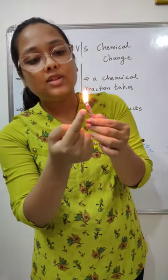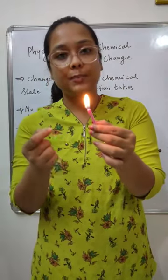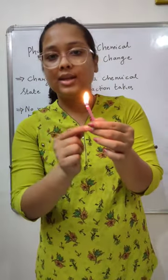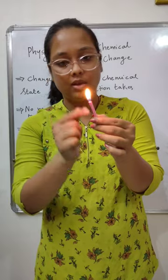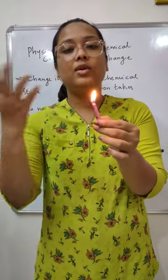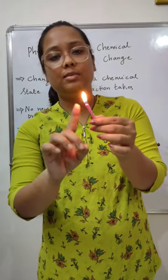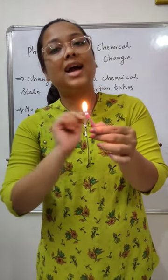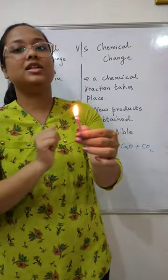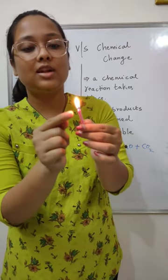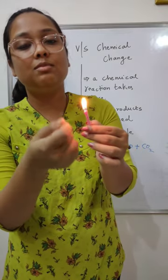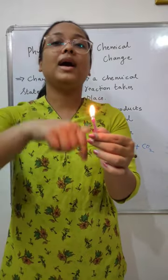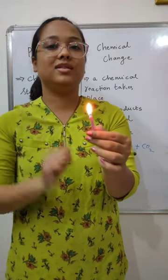Whereas burning of this cotton wick — it was white in color, and now it is getting converted into a black colored material. That is a chemical change because I cannot convert this black ash back into the cotton wick.